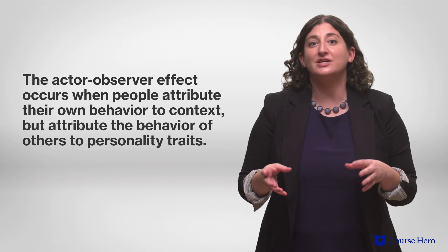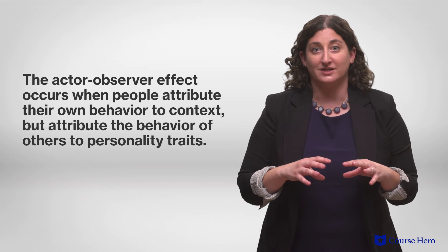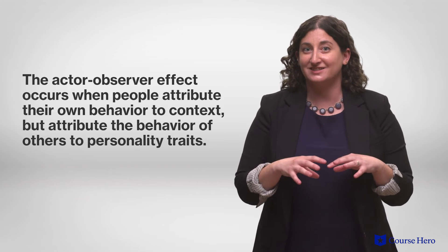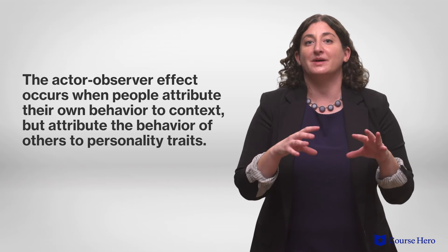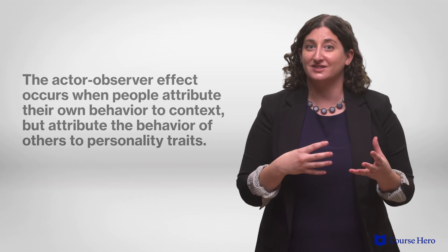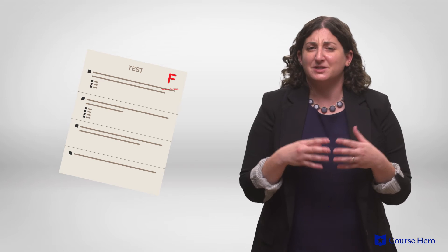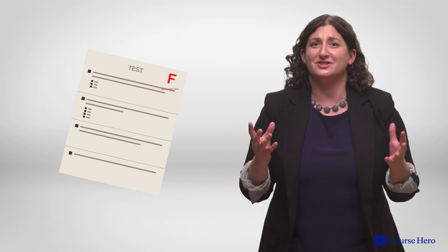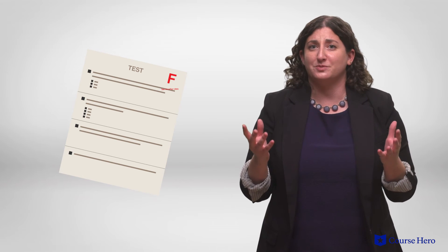On the flip side of this, the actor-observer effect occurs when people attribute their own behavior to context, but attribute the behavior of others to personality traits. For example, a student may believe that they failed a test because it was unreasonably hard, but think that their annoying roommate failed it due to their laziness or stupidity.